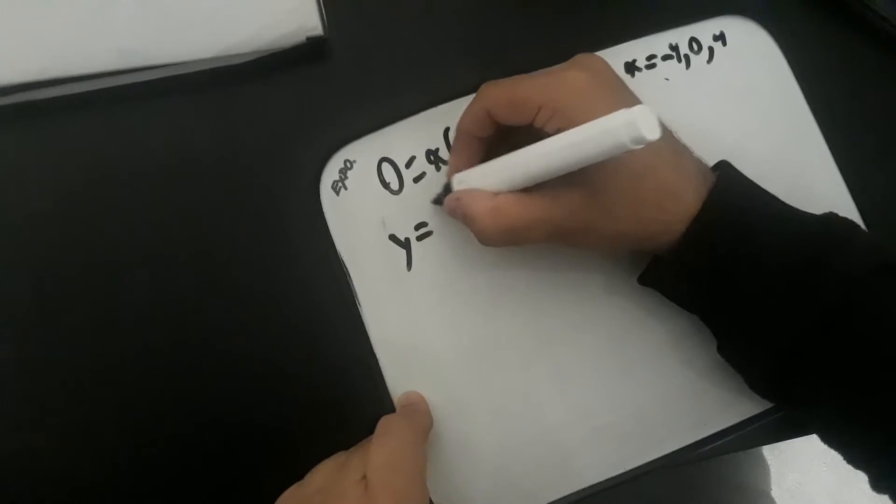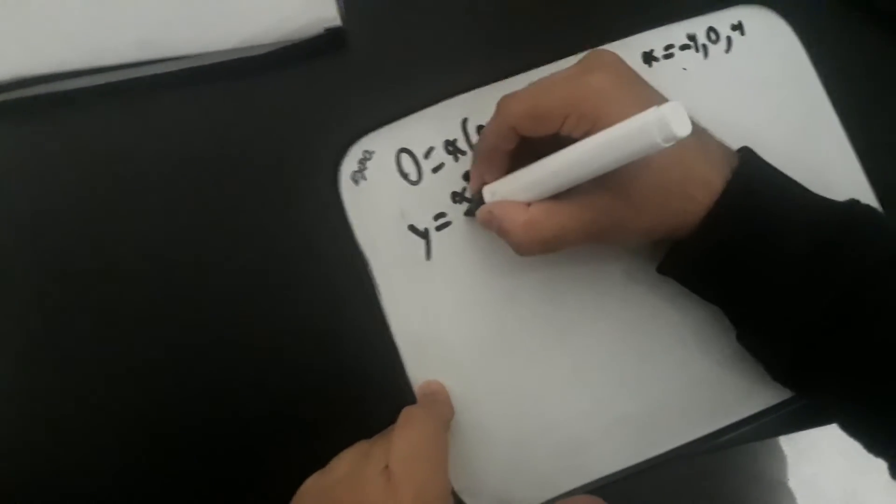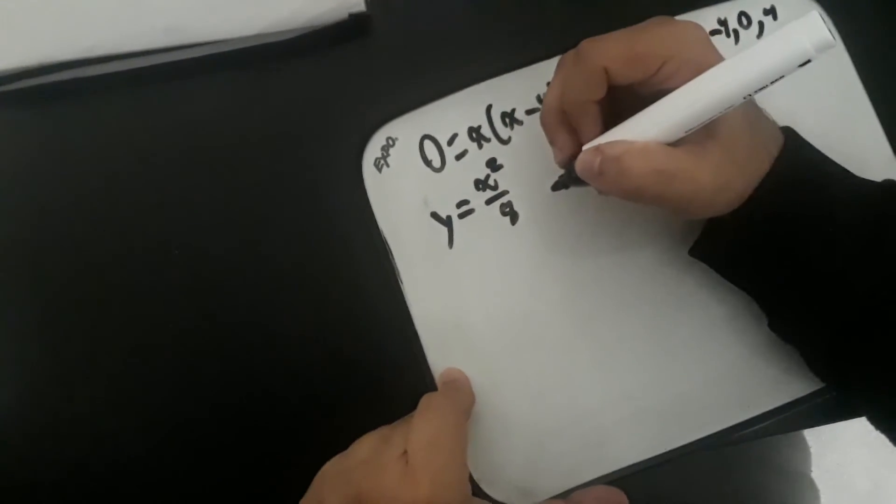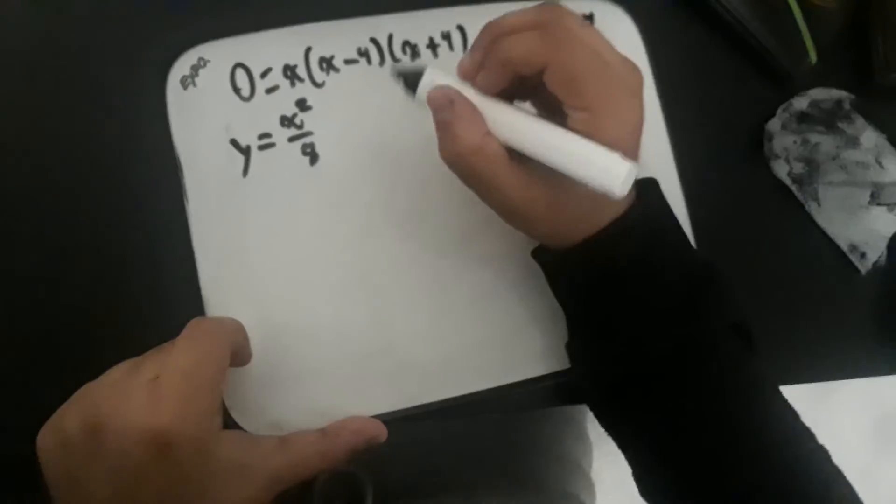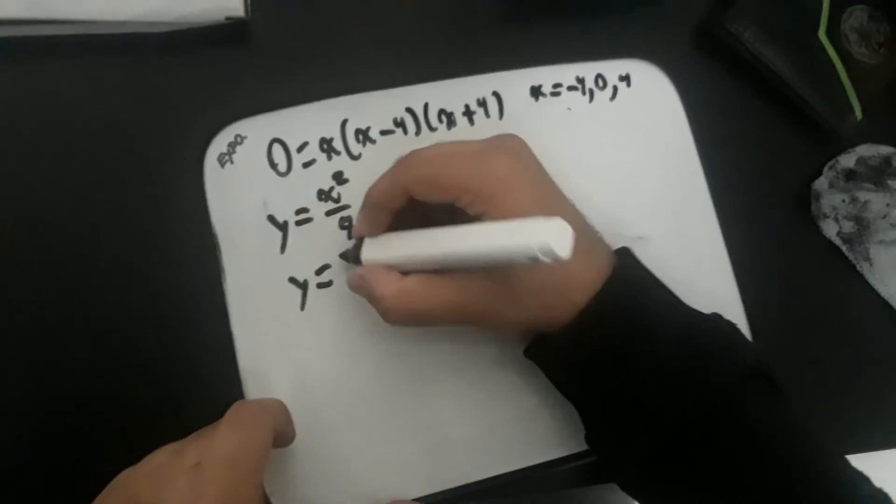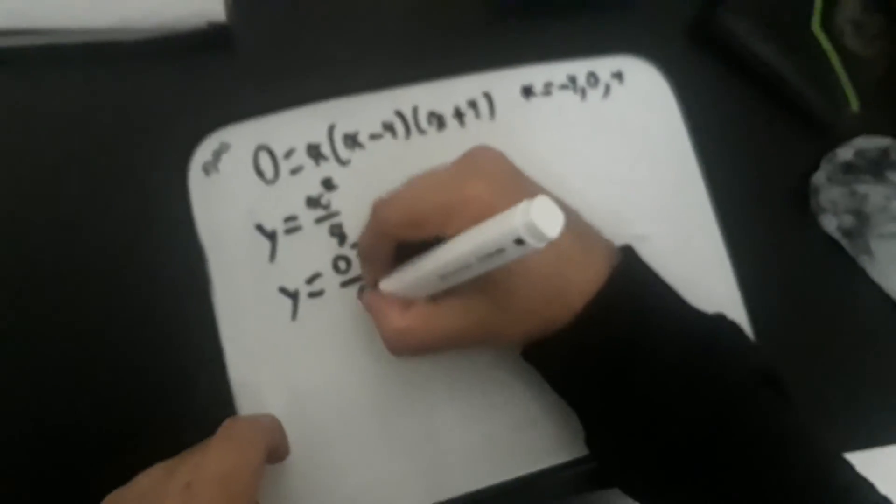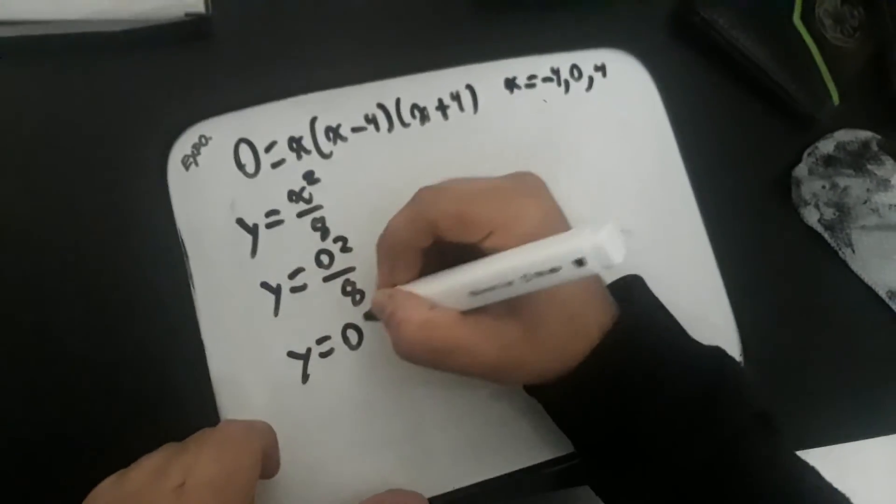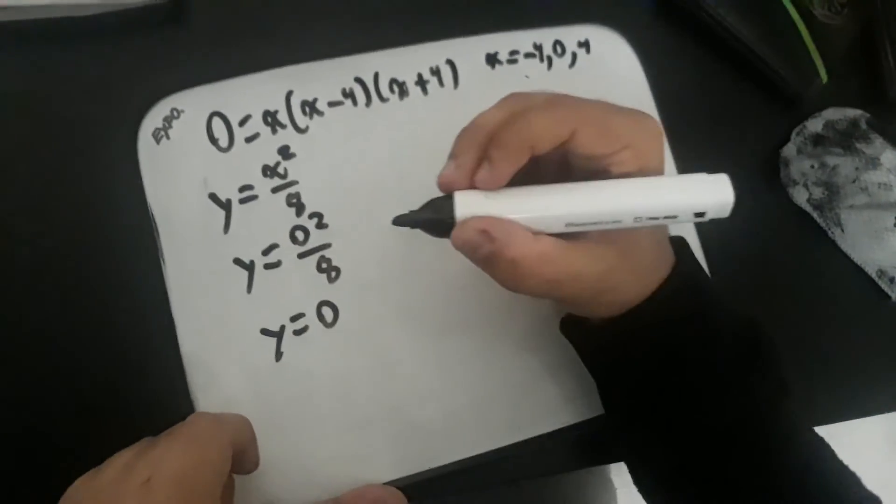To the equation we have, y equals x squared over 8. So when we sub in the 0, that just becomes y equals 0 squared over 8, which is 0 over 8, which is equal to 0. So one point is the origin.